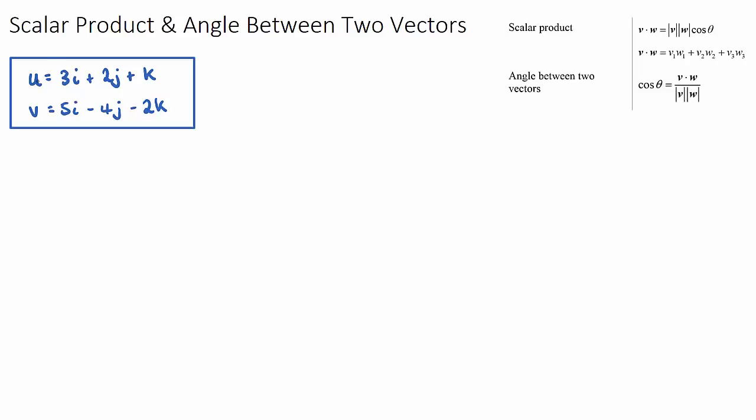I've given you two vectors, vector u and vector v here. Vector u and vector v are both in i, j and k form. If you wanted to put them in column form, you could. So vector u is also 3, 2, 1 and vector v would be 5, negative 4 and negative 2. Hopefully we've seen the difference between these two forms.